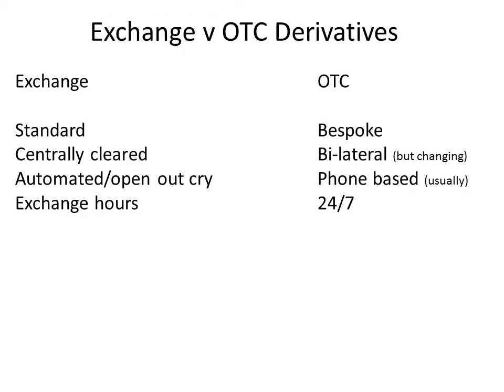Exchanges generally have fixed trading hours when the exchange is open for trading. Whereas in the over-the-counter market, which is normally frequented by large institutions and particularly banks, so long as the bank has somebody manned on a desk, they can trade essentially 24 hours of the day.